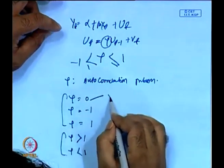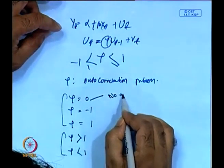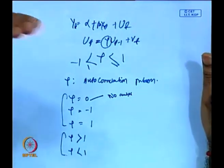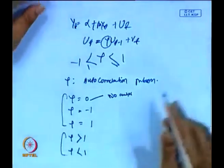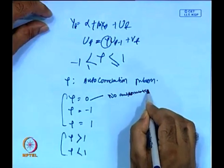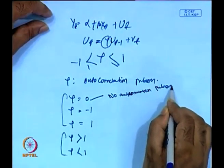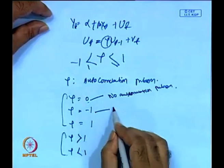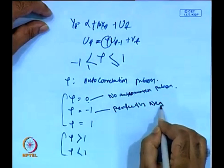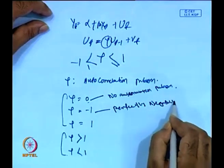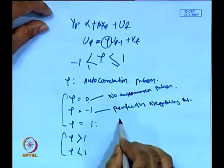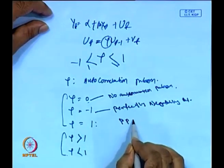If rho equals 0, it is an indication of no autocorrelation — no degree of association between the two error terms, called a no-autocorrelation system. When rho equals minus 1, it is called perfectly negatively autocorrelated. When rho equals 1, it is perfectly positively autocorrelated.